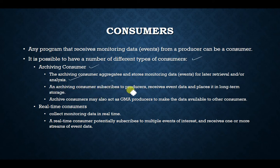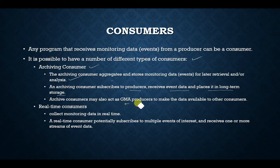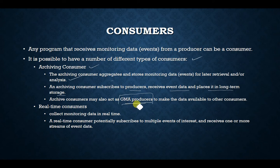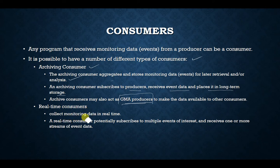An archiving consumer subscribes to producers, receives event data, and places it in long-term storage. Archive consumers may also act as a GMA (Grid Monitoring Architecture) producer to make data available to other consumers, essentially acting as a producer for other consumers since all data has been archived. The second type is the real-time consumer, who collects monitoring data in real time, as opposed to the archiving consumer.